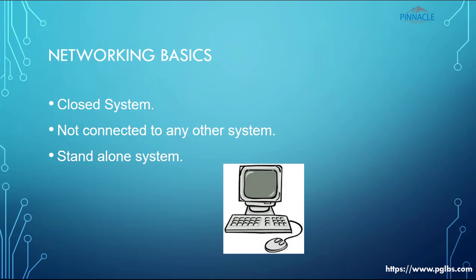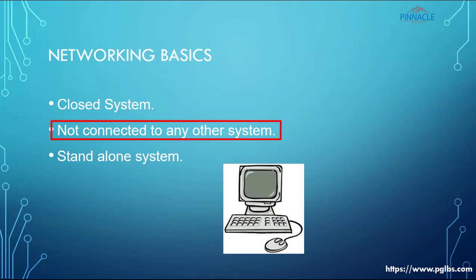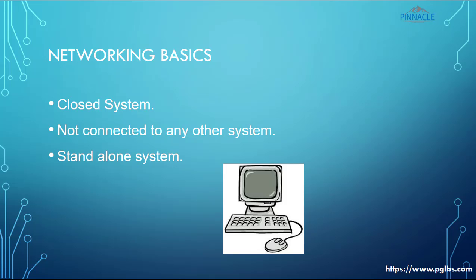The second type is a closed system. A closed system is not connected to any other system — it is also called a standalone system. For example, if you have a PC at home not connected to a Wi-Fi router or the internet, that PC is a standalone, or closed, system. A closed system cannot send or receive information from a different system, whereas an open system allows sharing of information. When we talk about connecting two or more systems together, we are visualizing the concept of a computer network.